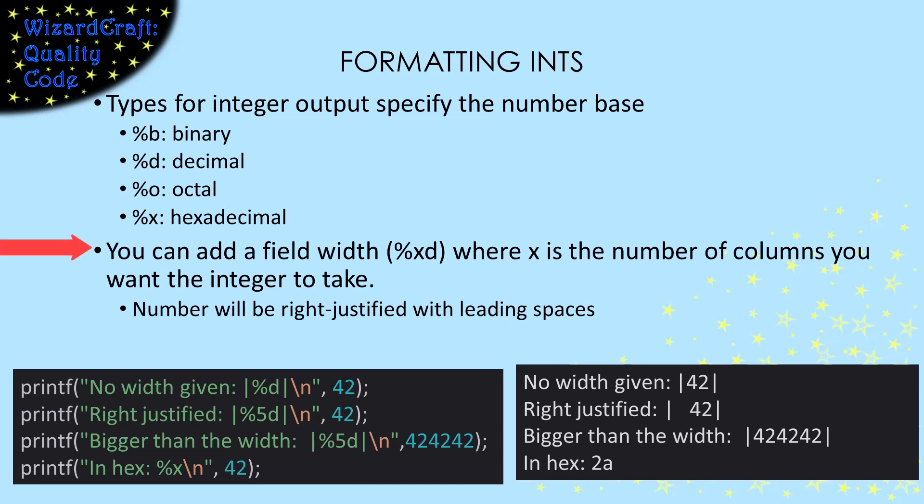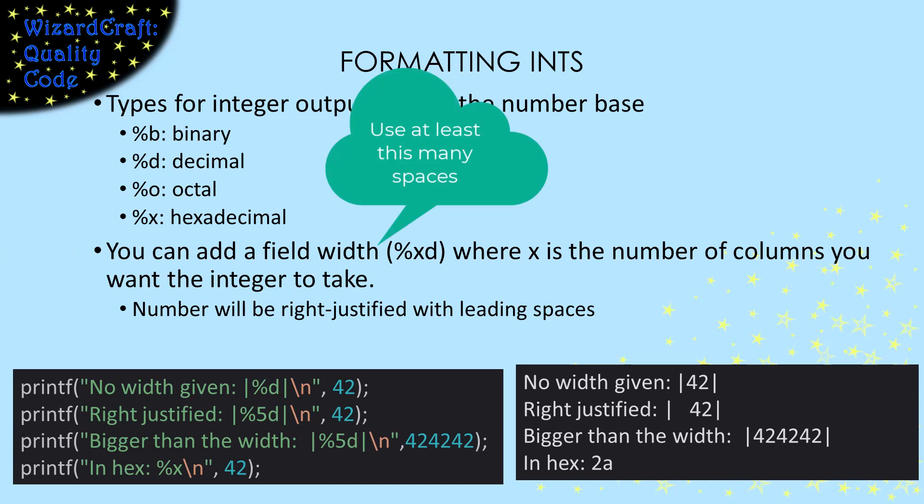If you specify a width and your number is smaller than that width, the output will be right justified in that position and left filled with spaces. If you specify a width and your number is larger than that width, it will be output using the number of spaces it needs. So essentially, the width specifier is saying: use at least this many spaces.